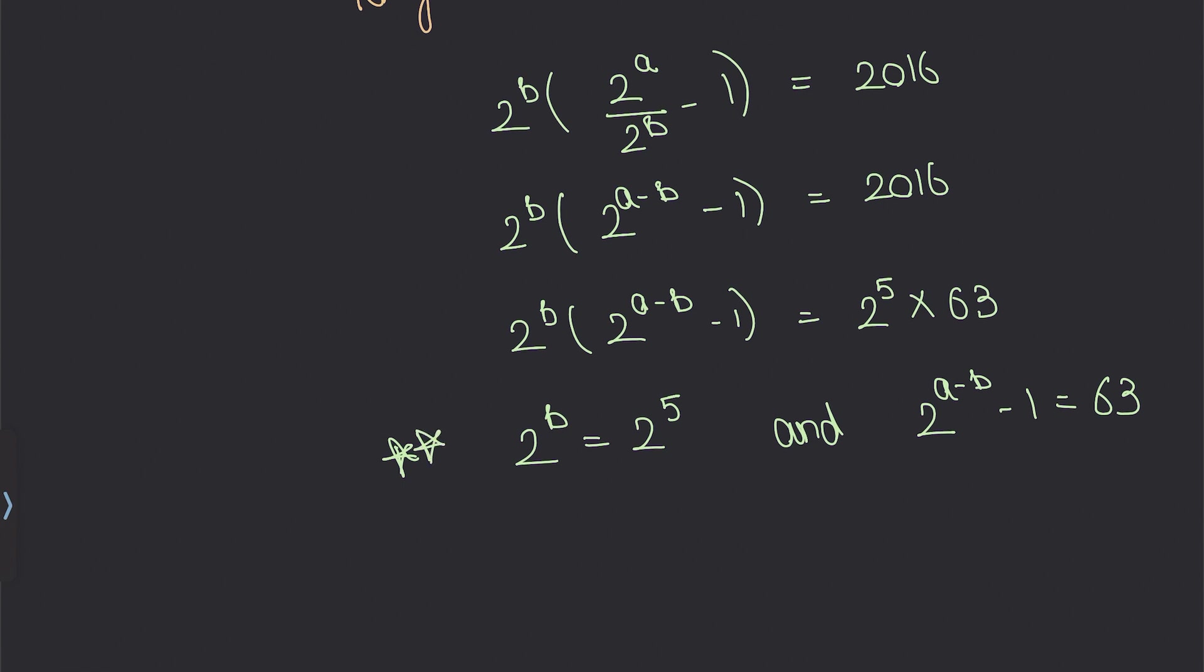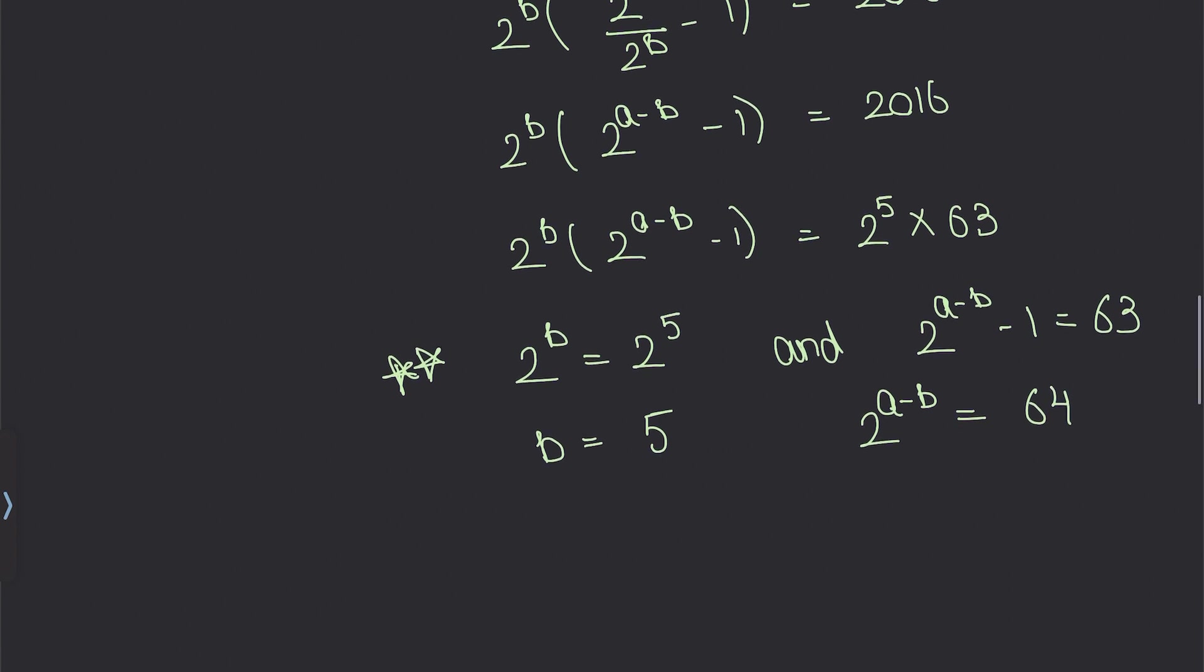Now if 2^b = 2^5, then we can simply say b = 5, and 2^(a-b) = 64. Now we know that 64 is 2^6,